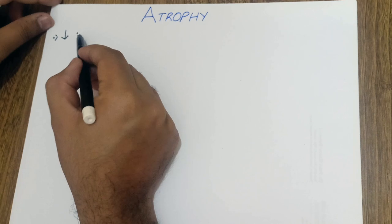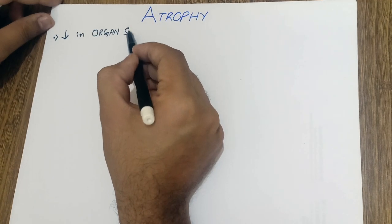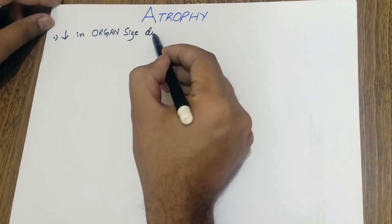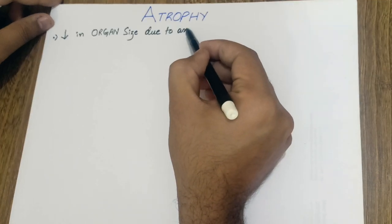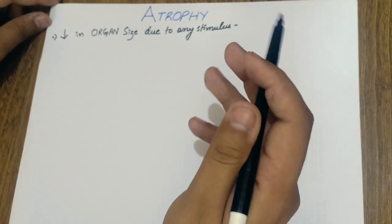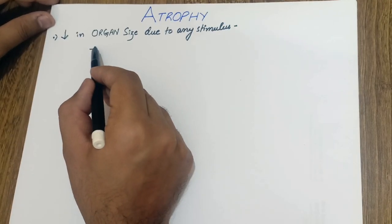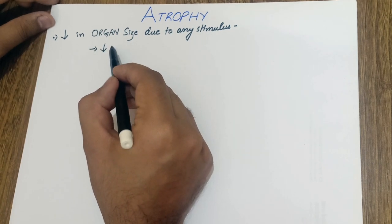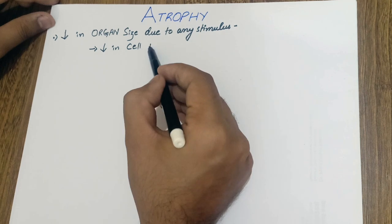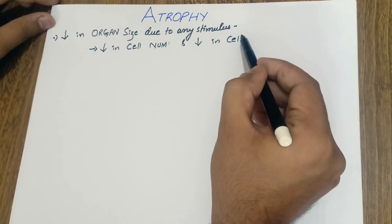Starting from the definition: what is atrophy? Atrophy is simply a decrease in organ size due to any stimulus. Atrophy occurs due to a decrease in cell number and a decrease in cell size.